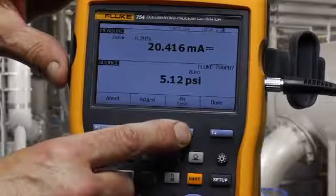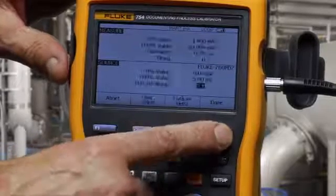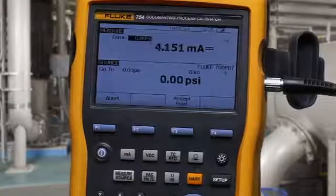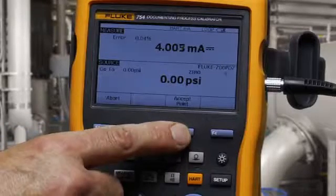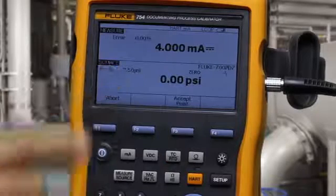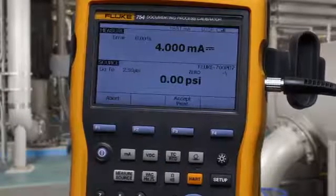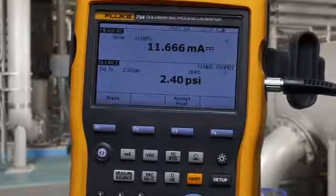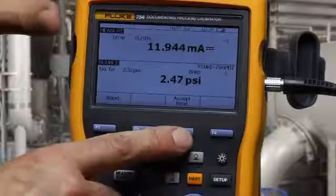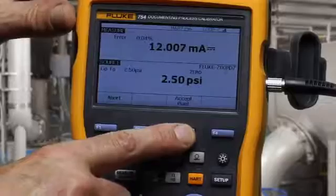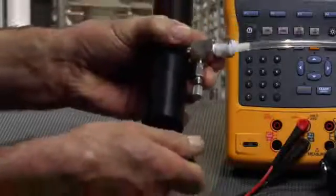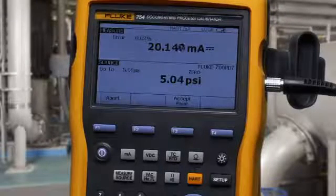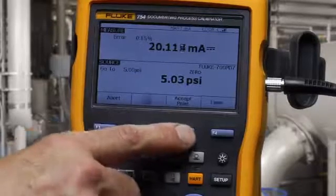Now, once the adjustment is complete, select as left and repeat the test and confirm that the adjustment was successful. Apply the zero percent value, 50%, and then 100% 5 PSI. Test is complete.